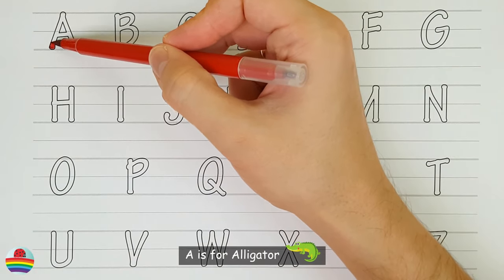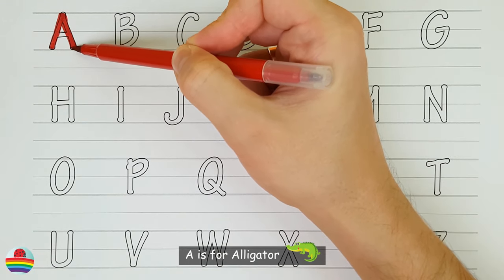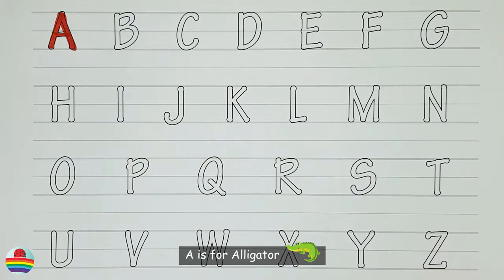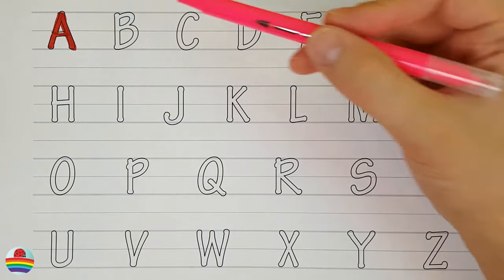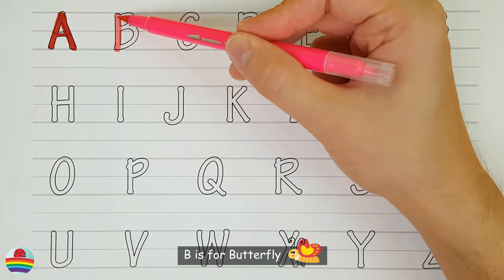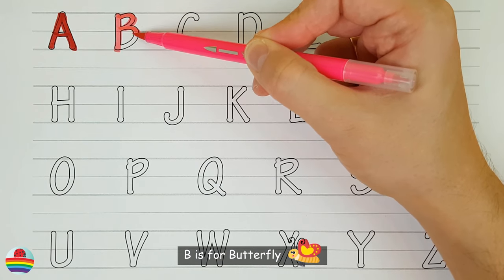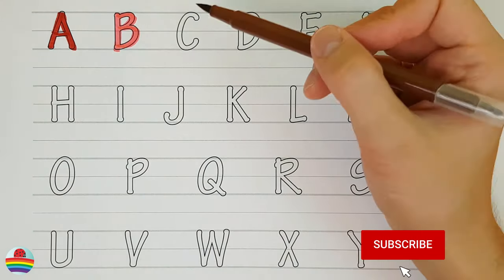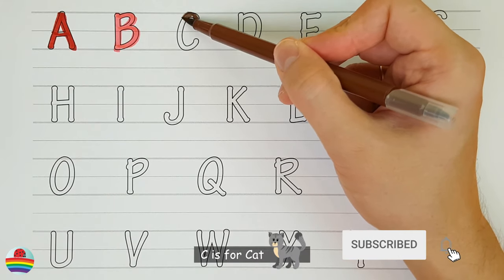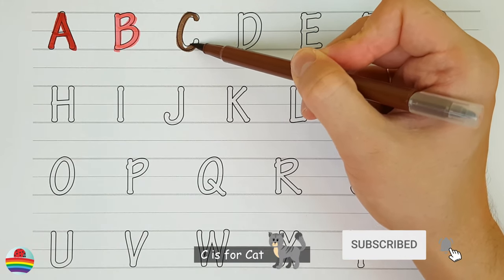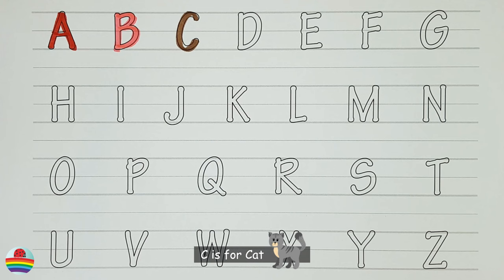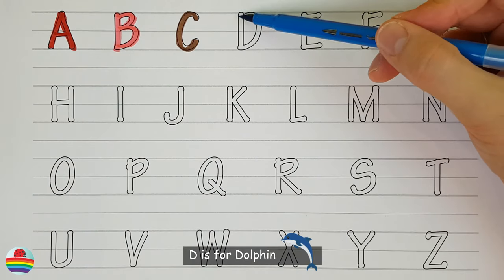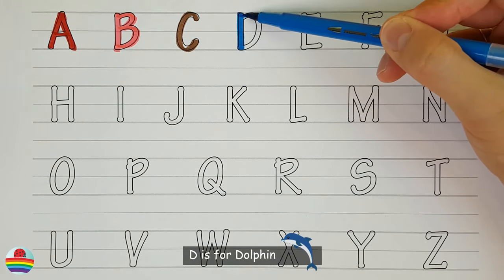A. A is for alligator. A. B. B is for butterfly. B. C. C is for cat. C. D. D